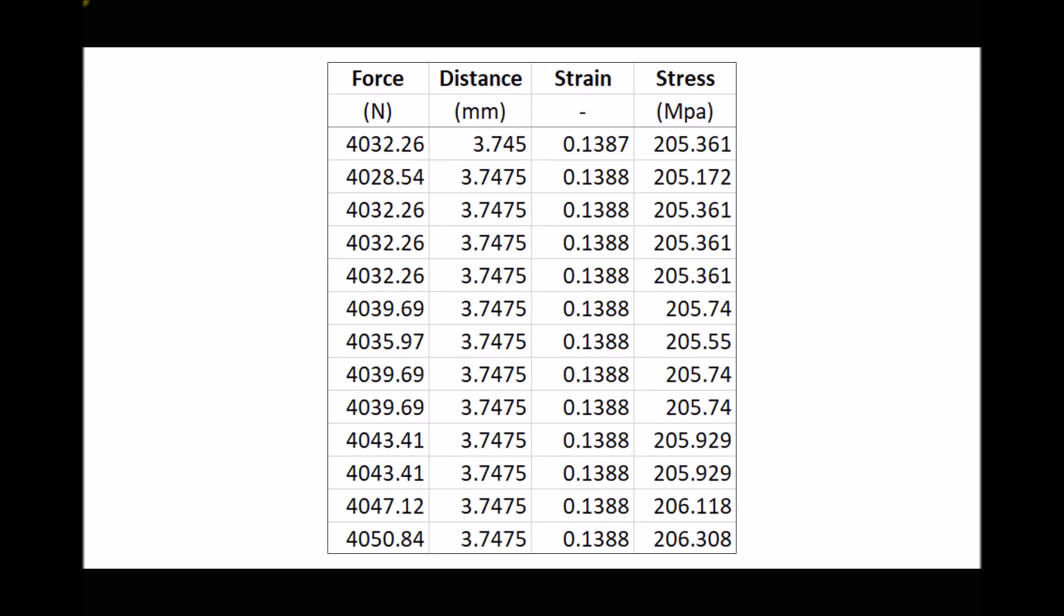On the screen here we have a snippet of data from a UTS test. In the left column is force, in the second column we have distance or displacement, then strain and stress. It should be clear from looking at this that we have quantitative data—it has quantities, it has numbers. So this is an example of quantitative data.